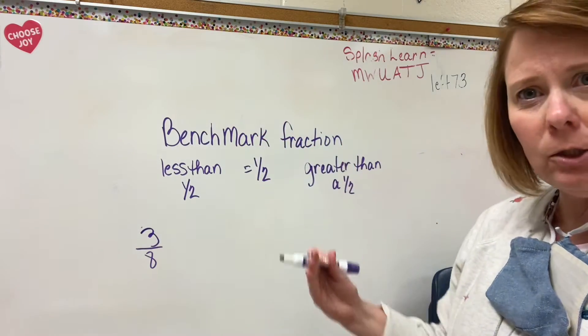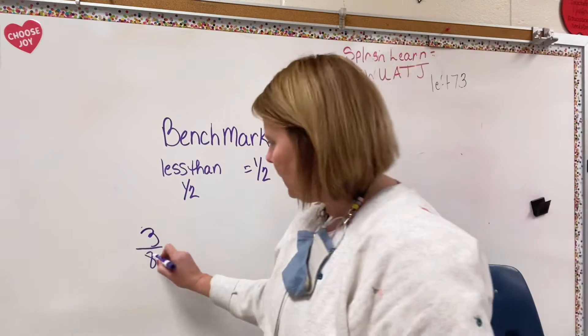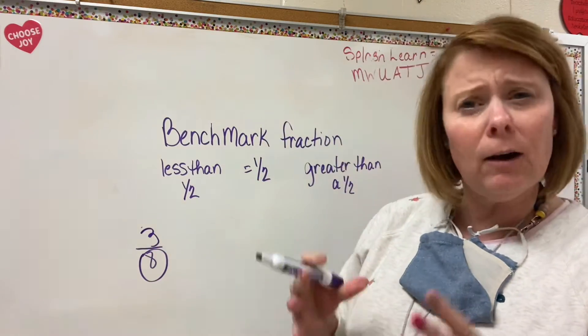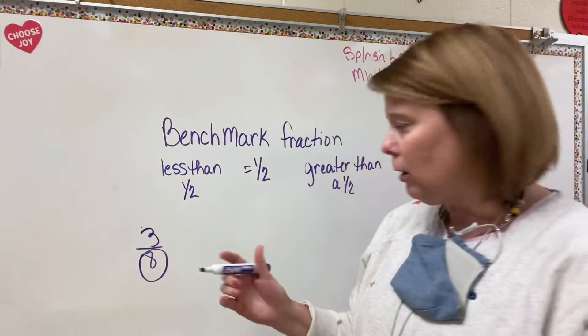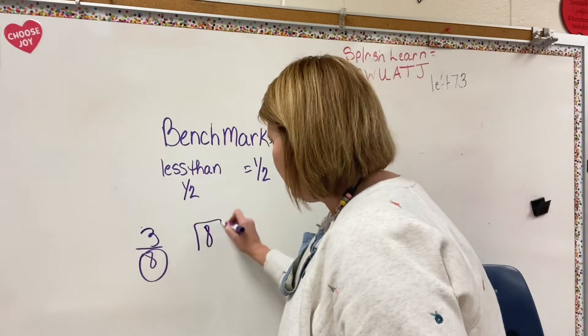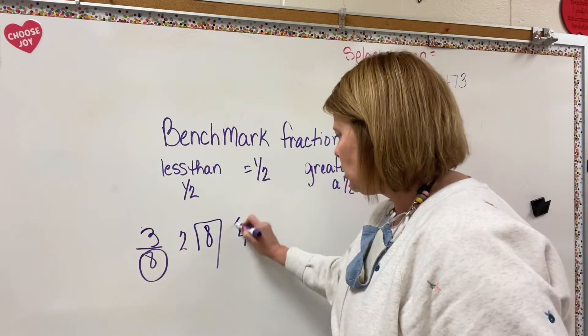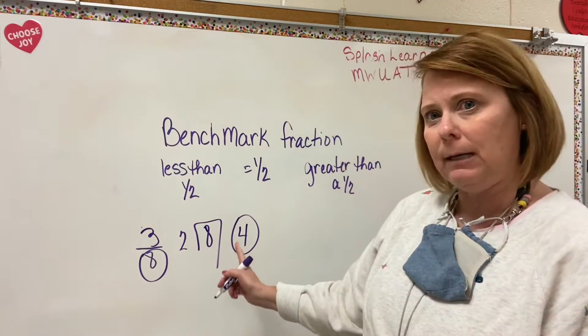And the way that I'm going to do this is I'm going to look at our denominator, which is the bottom number, and I'm going to think, is there a clear half of 8? Or you can divide 8 by 2, and that would get me 4. So the clear half of 8 is 4.